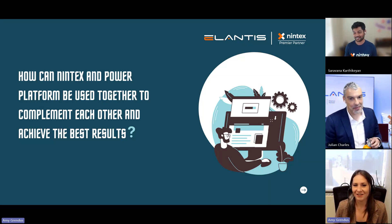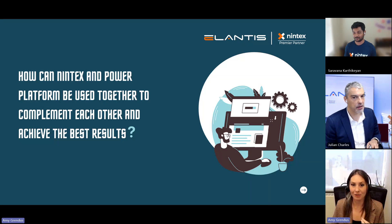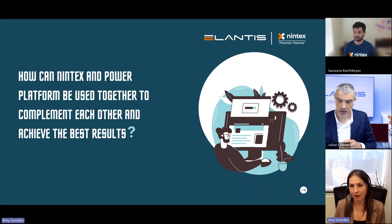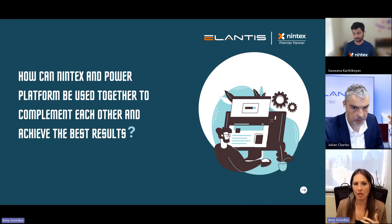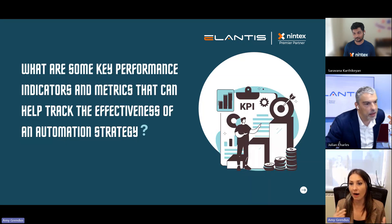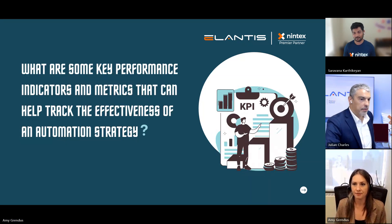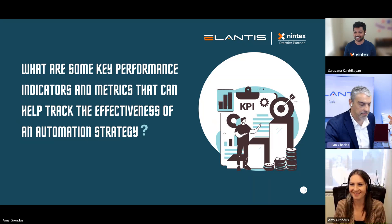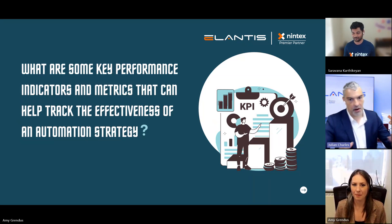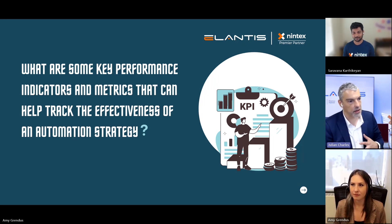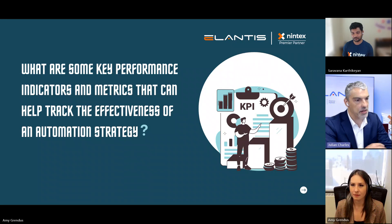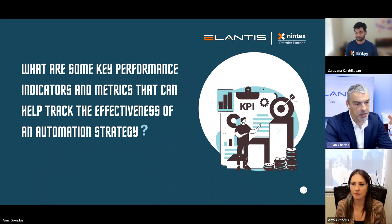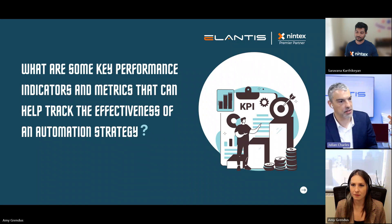We've gotten a bit technical, so let's bring this back to strategy. Could you share some KPIs or metrics that organizations can use to track the effectiveness of their automation strategy? Looking at it from a business perspective, we can look at cycle time reduction — understanding your cycle cost and how many times a process is going to execute will have light bulbs going on for your stakeholders. At Atlantis, we do a gap analysis: we look at current state and future desired state, and we're able to tell you what your current state cost is and what your future predicted return on investment is, then do a comparison.